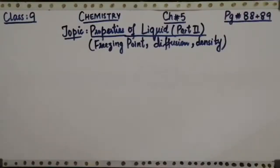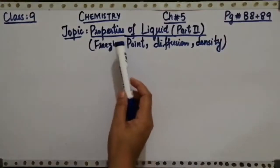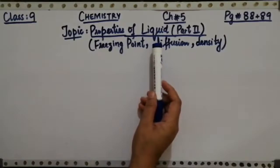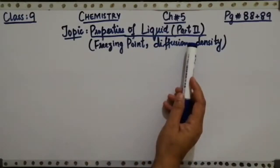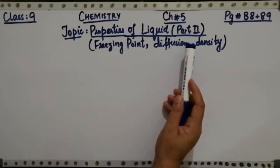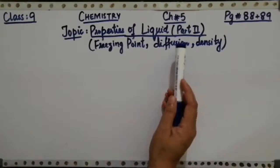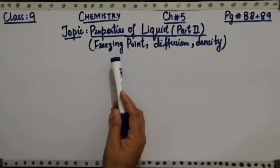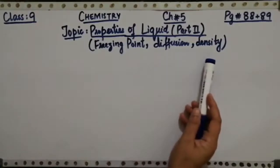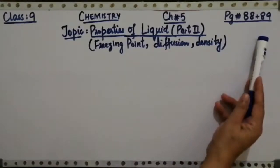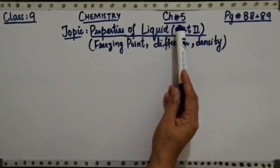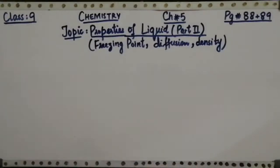Bismillahirrahmanirrahim, assalamu alaikum. Welcome to Chemistry class for grade 9. Today the topic we are going to study is related to the properties of liquid, and it is part 2. We have completed part 1 with some other properties like boiling point and vapor pressure. Today we are completing with freezing point, diffusion, and density. These topics are mentioned in your book on page number 88 and 89 of chapter number 5, Physical State of Matter.